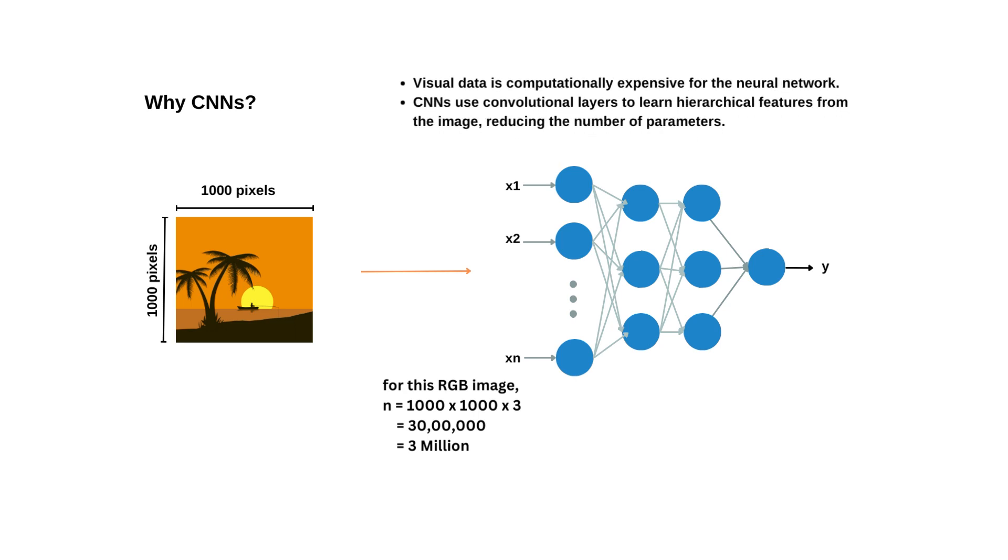CNNs on the other hand use convolutional layers to automatically learn hierarchical features from the image, reducing the number of parameters and enabling the network to work effectively. I hope now you are convinced about the need of CNN. Now let's learn the components of CNN and their working.